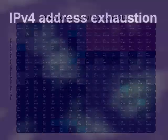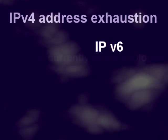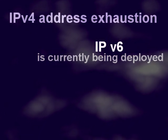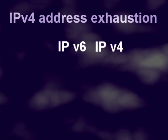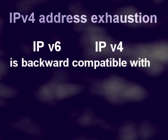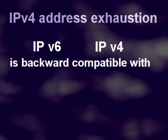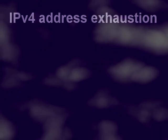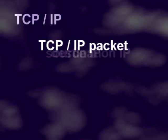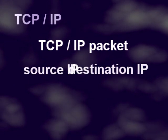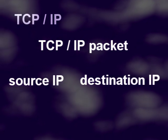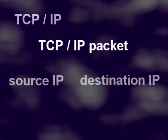IP version 6 is currently being deployed to solve the problems of IP address exhaustion in version 4. IPv6 addresses are backwards compatible with IPv4 addresses to allow legacy devices to still work on the internet. IP addresses are used within TCP packets to address the source and destination of the packet, used in data transfer across the internet.